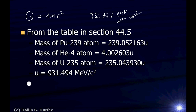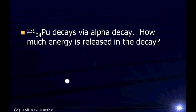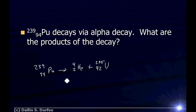So all I need to do now is find the mass of these nuclei and subtract them. I want the mass of a plutonium-239 nucleus, and if you go to section 44.5 in your textbook, it will tell you the mass of a plutonium-239 atom. But we didn't want the mass of the atom — we wanted the mass of the nucleus. An atom has a nucleus plus 94 electrons, since the atomic number is 94, so I'm going to have to subtract off the mass of 94 electrons.